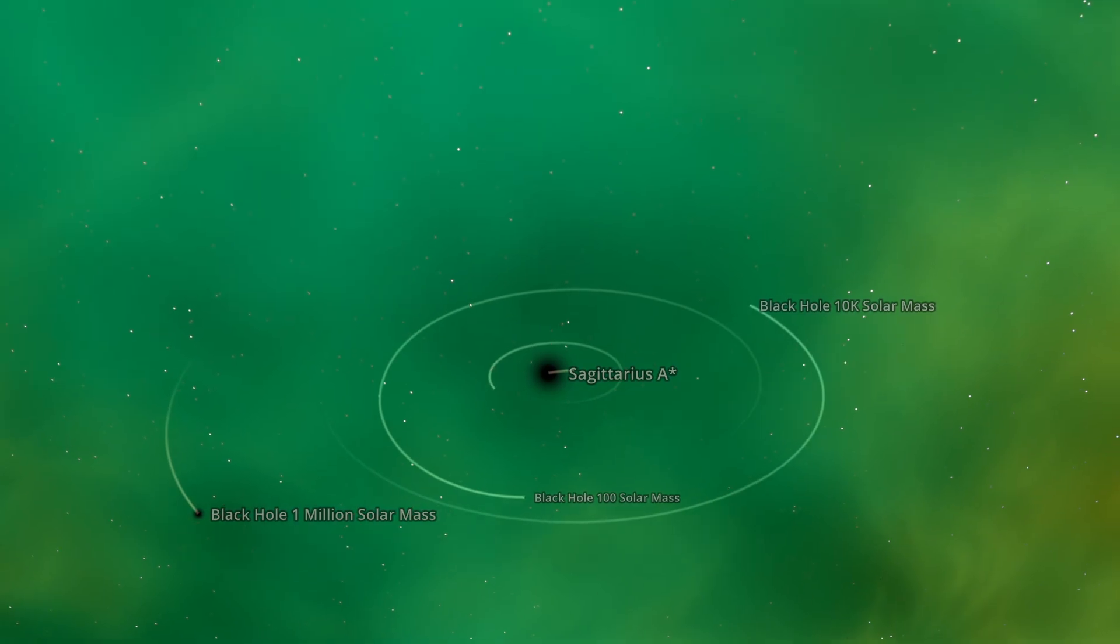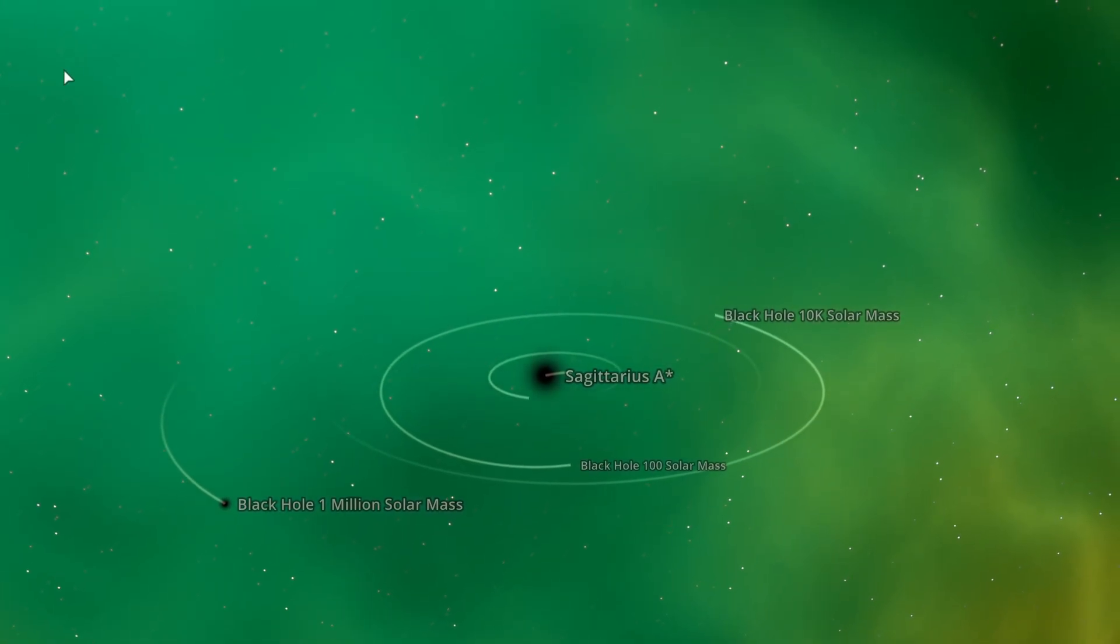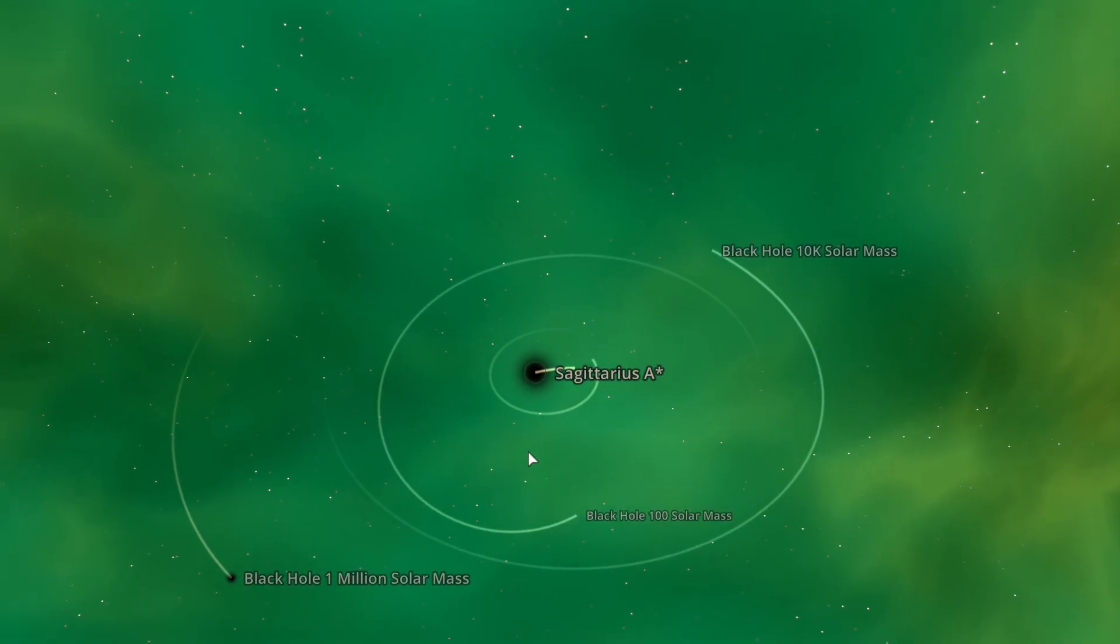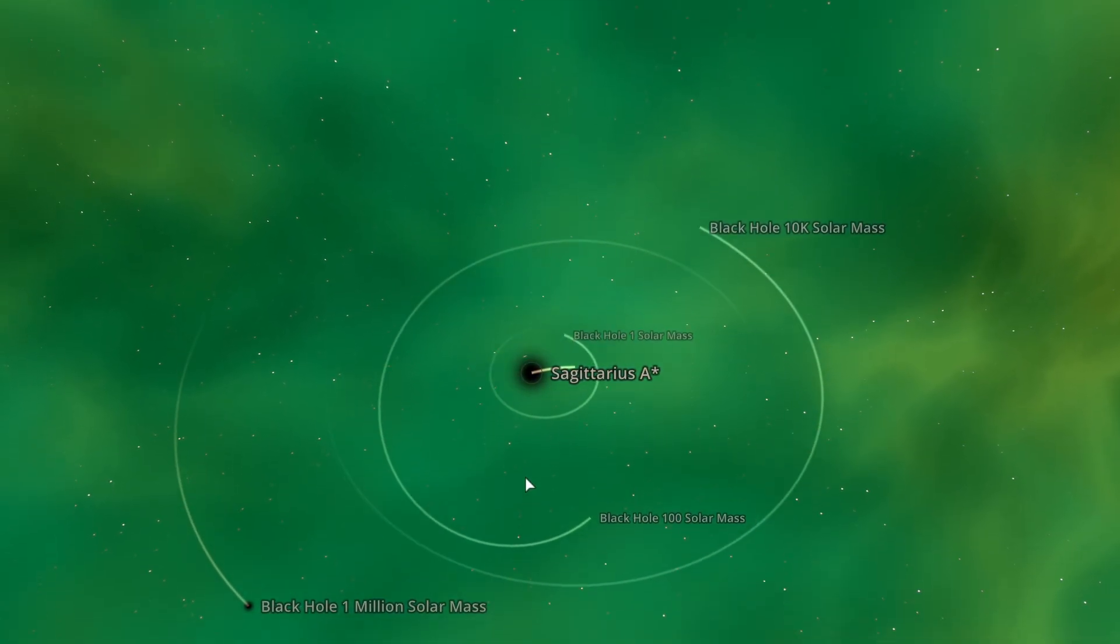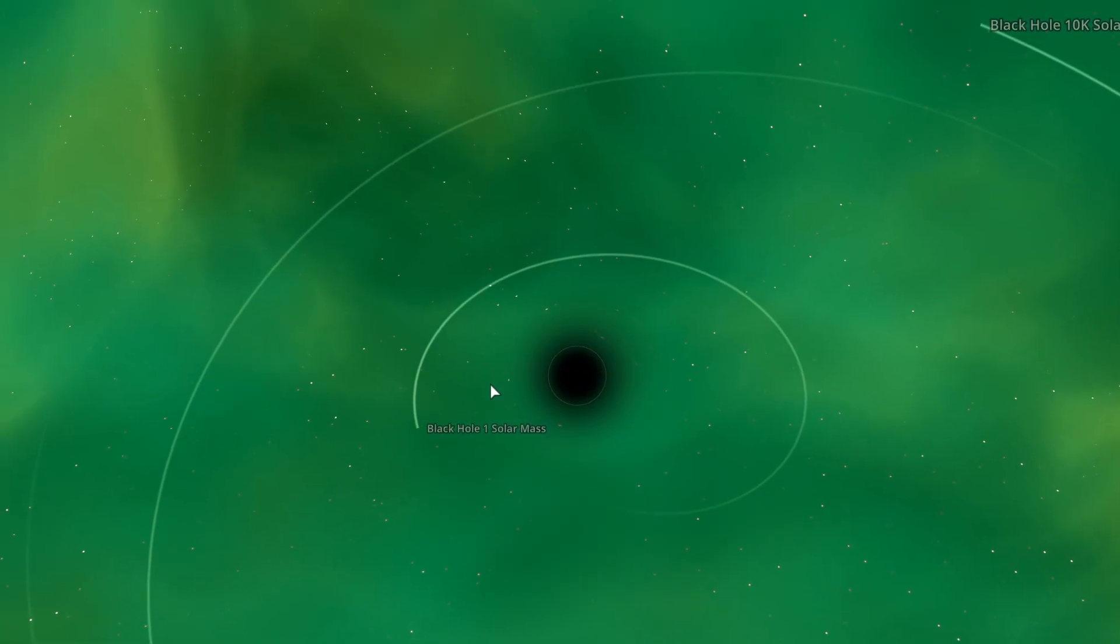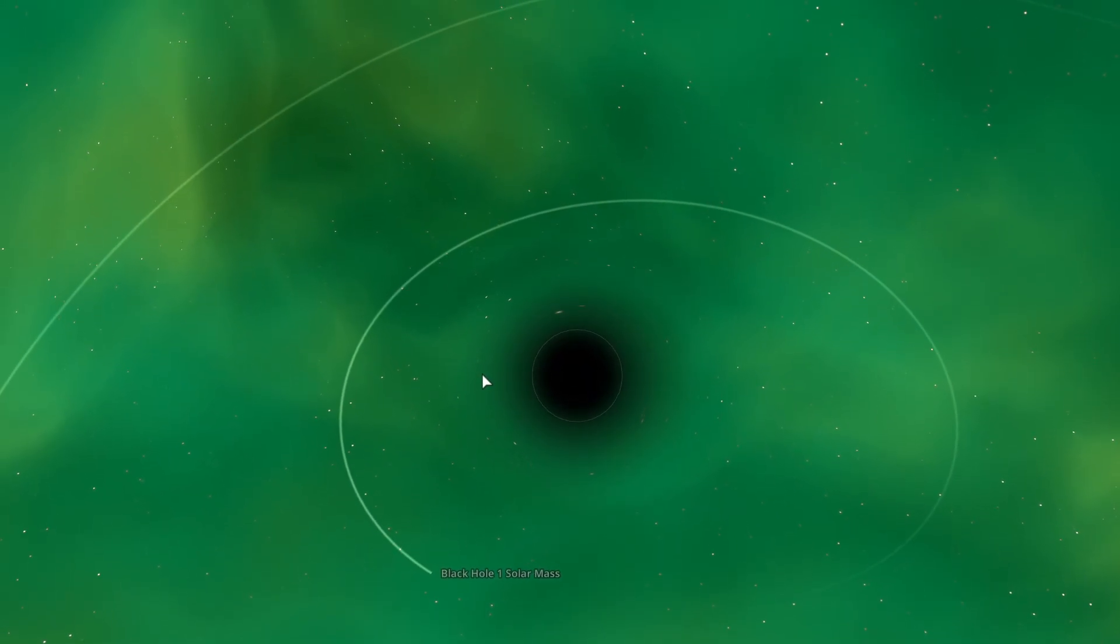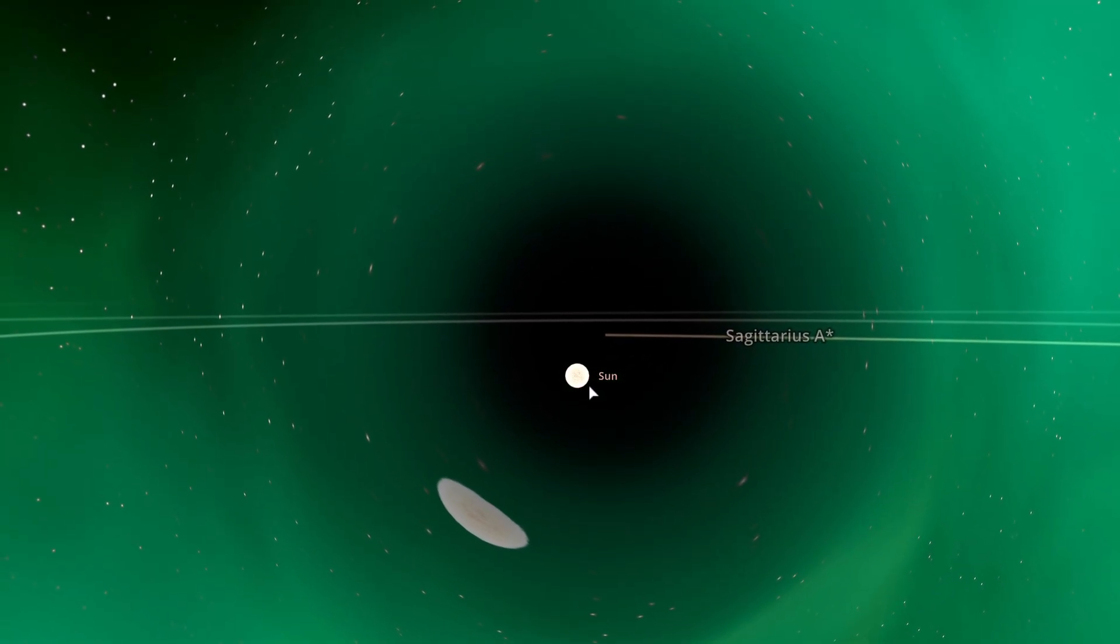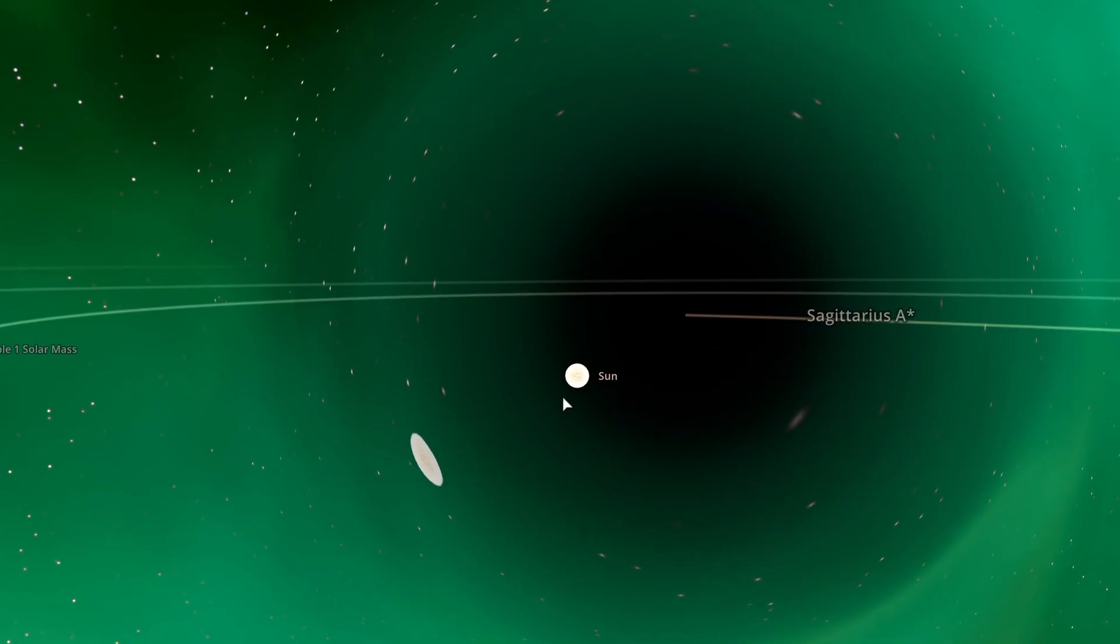For example, in this simulation, we have five different black holes, from a really small one, only a little bit more massive than the sun itself, up to the size of Sagittarius A star, the central black hole in the middle of our own galaxy. This one here is about 4.3 million masses of the sun, and in terms of the radius, or specifically the radius of the shadow that you see right here, that's about 19 times bigger than the sun.